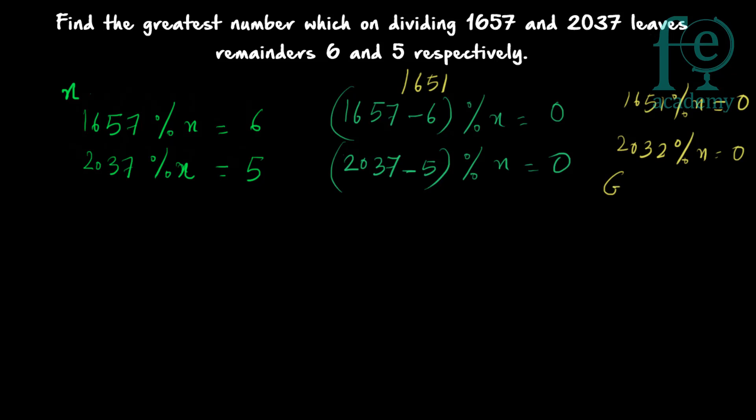You are looking for the GCD — greatest common divisor — or highest common factor. The highest common factor of 1651 and 2032 will be your answer. That is, both 1651 and 2032 are common multiples of x, and you need the highest common factor of 1651 and 2032.